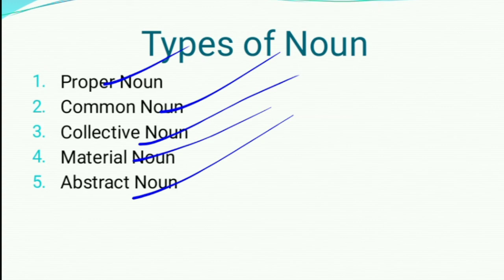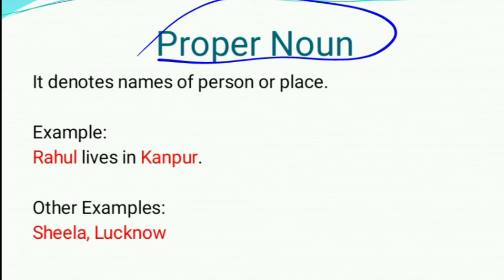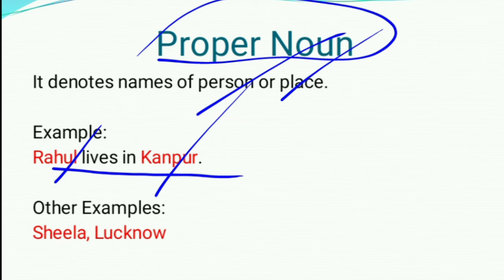Now we shall know in detail. What about proper noun? It denotes names of a person or place. For example, Rahul lives in Kanpur — Rahul and Kanpur are both proper nouns. Other examples: Sheila and Lucknow — they are examples of proper noun.